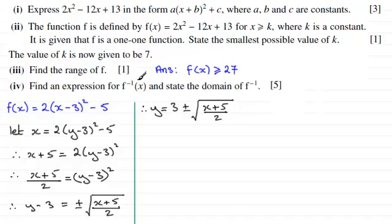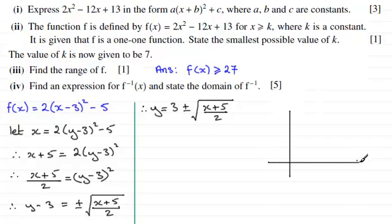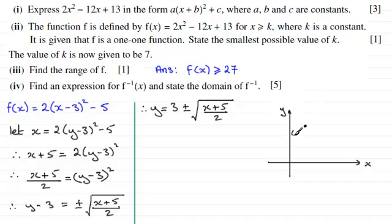When working out the inverse function of f(x), we've got to decide which one of the plus or minus parts we take. To answer this it's best to look at the sketch graph of y equals f(x) and the inverse function. When finding the range of f at k equals 7, we found the range of f was anything greater than or equal to 27. So we have a point here — not drawn to scale — with coordinates (7, 27).